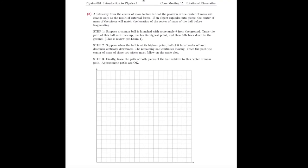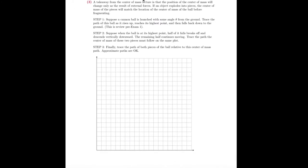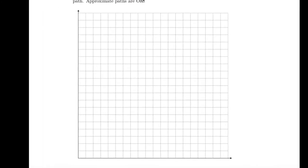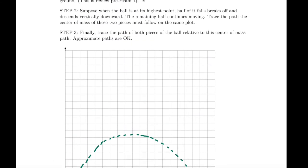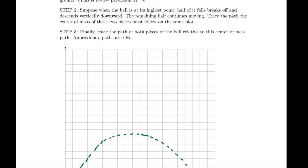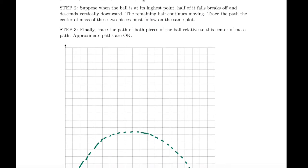Center of mass changes only because of external forces. An object explodes into pieces — the center of mass will match the location of what it was before fragmenting. So let's draw a cannonball. A cannon launches it up at some angle, it comes up and comes back down. Step 2: suppose when the ball is at the highest point, half of it breaks and falls vertically downward while the remaining half continues moving. We need to trace the path of the center of mass of the two pieces.